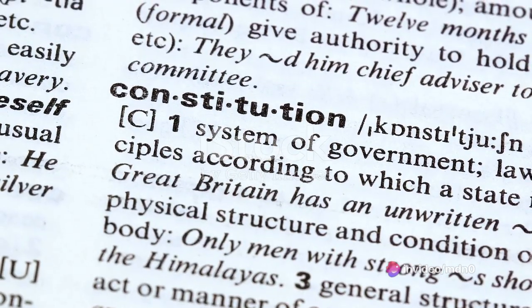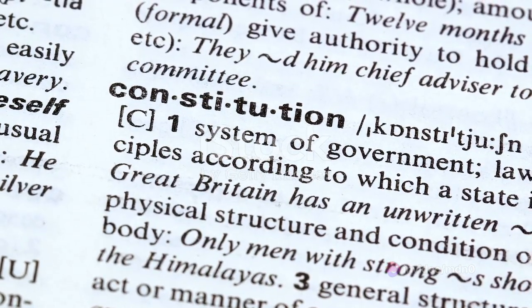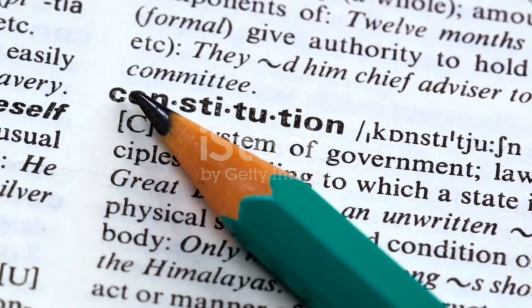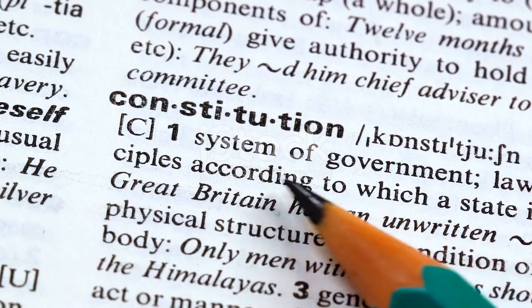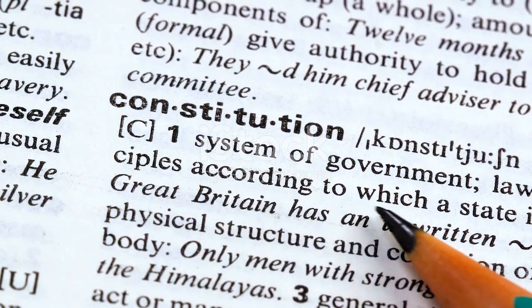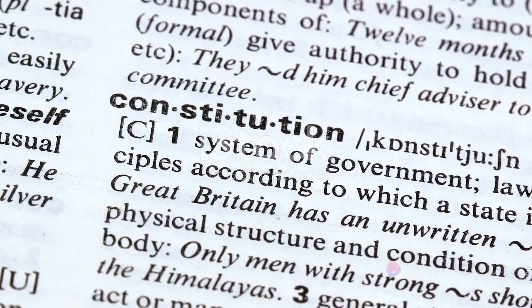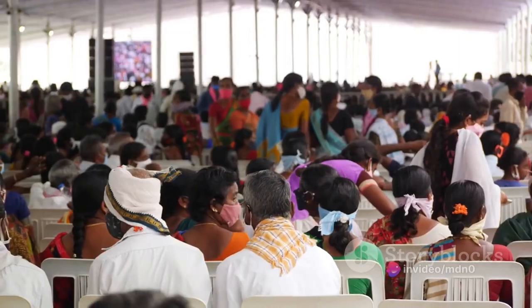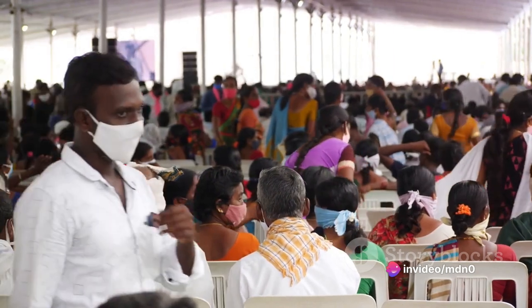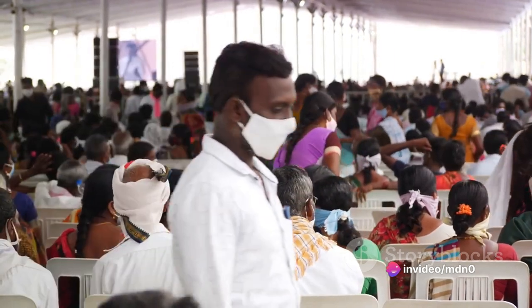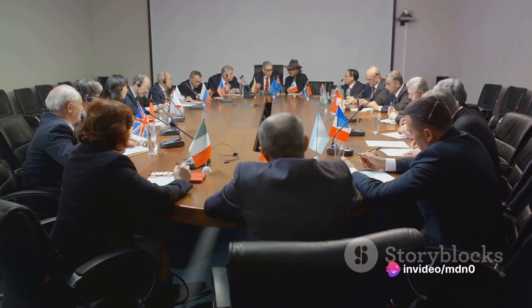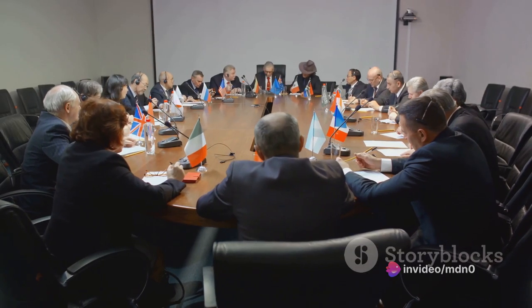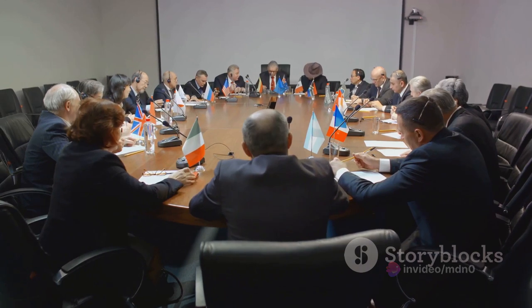This lofty goal was to be achieved through three main objectives: reaching an agreement with Indian leaders on a constitution for India, forming a constitution-making body — the Constituent Assembly of India — and establishing an executive council with the backing of the major Indian parties.